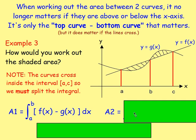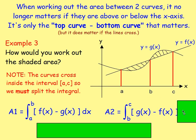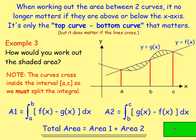For area two, it starts at B and finishes at C. The top curve this time is g of x and f of x is on the bottom, so it's g of x minus f of x, integrated with respect to x between B and C. The total area is then area one plus area two.